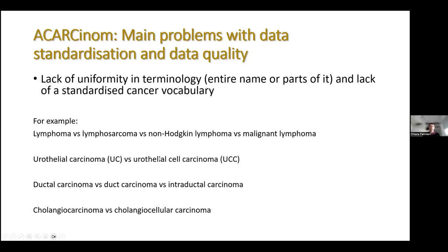The third very important issue is the lack of uniformity in terminology and lack of a standardized cancer vocabulary. In human medicine, they refer to the WHO classification of human cancers, where every tumor has a specific name and code — that's the standard. We don't have an analogous classification for animal cancers, and there is no consistency across textbooks or publications regarding the names of specific entities. Pathology reports may refer to the same tumor with different names.